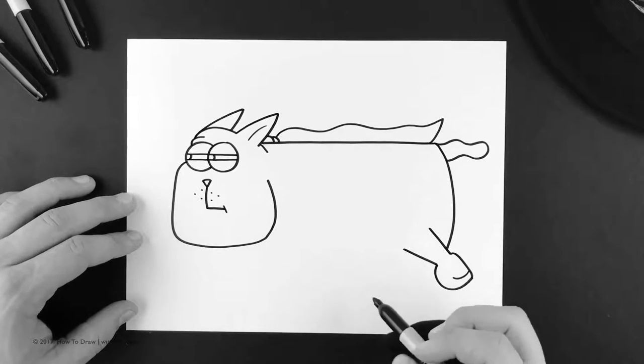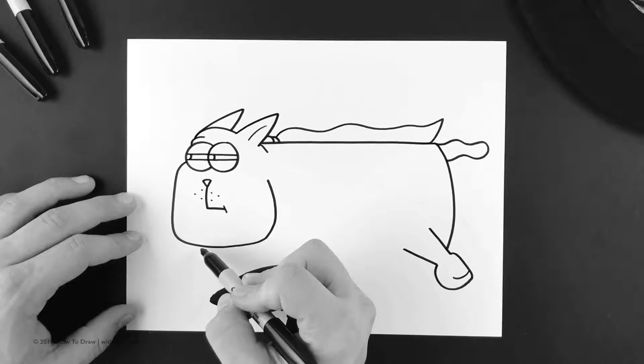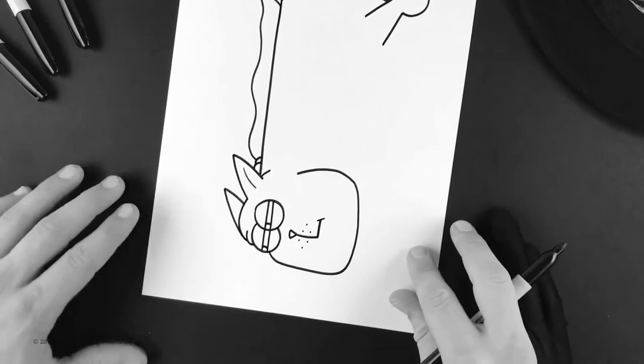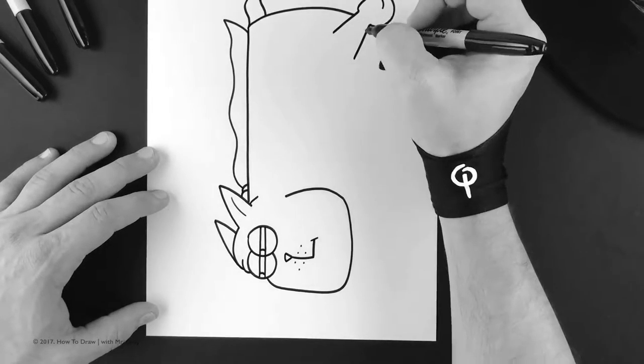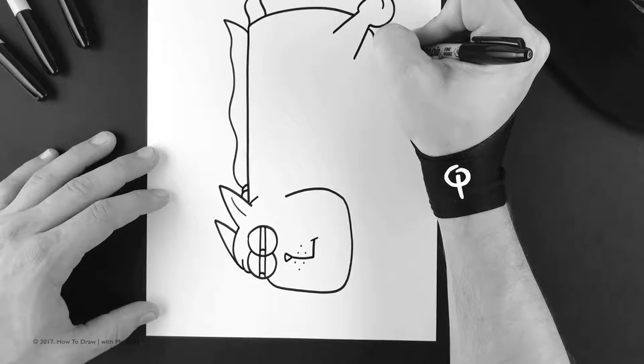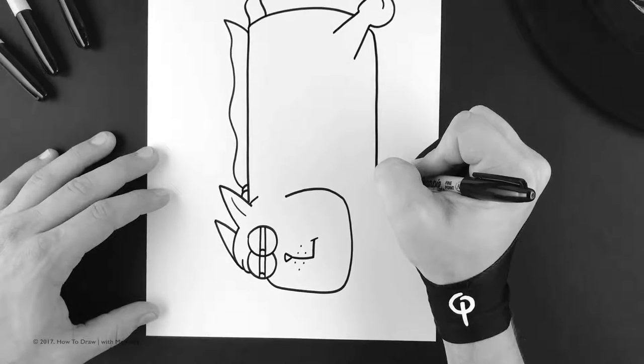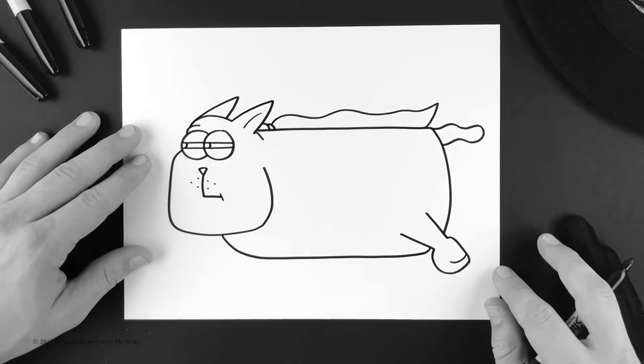Now before we do the rest, we need to finish his body. So we're going to come from the bottom of his head and we're going to go straight across into here. But to make it easier, I like to turn the paper over—just makes it a little easier. And then come right into the head just like that.